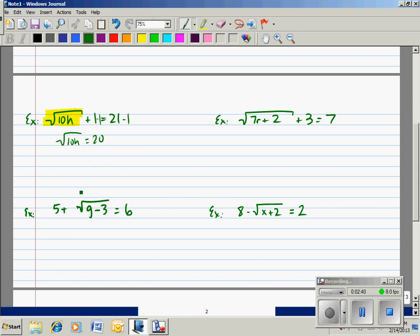I want to undo the square root symbol. So what I want to do is the opposite of the square root, and that operation is squaring. Those undo each other. Much like adding and subtracting undo each other. Multiplying and dividing undo each other. Square root and squaring will undo each other, which leaves 10h, and 20 squared is 400. Finally, if we divide by 10, we get h is 40.